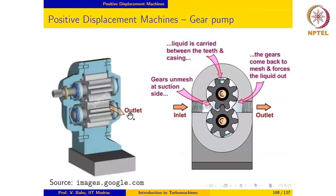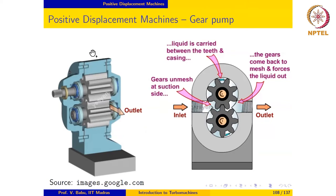Here is an example of a positive displacement machine — this is a gear pump. As the name suggests, this consists of two gears; they can be spur gears, helical gears, or any other type. Here we are looking at a design that utilizes a pair of spur gears. The gear on the top is connected to a source of power — that is the driving gear — and the one on the bottom is the driven or idler gear. In a cross-sectional view, the driving gear on top is supplied with power and the idler gear is on the bottom, rotating in the clockwise direction.